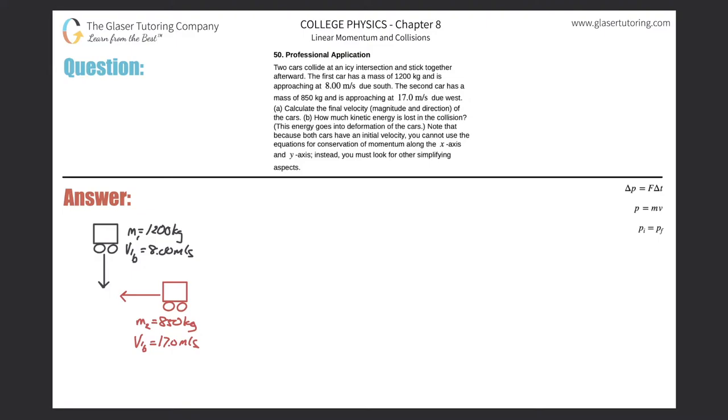Number 50, professional application. Two cars collide at an icy intersection and stick together afterward. The first car has a mass of 1,200 kilograms and is approaching at 8 meters per second due south. The second car has a mass of 850 kilograms and is approaching at 17 meters per second due west.